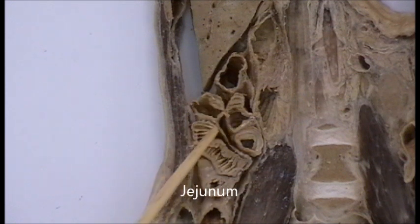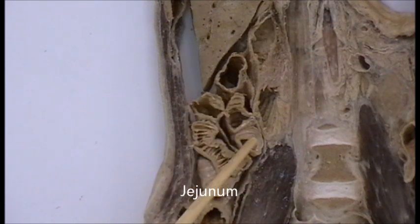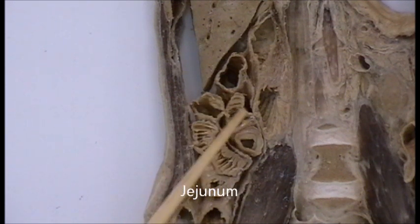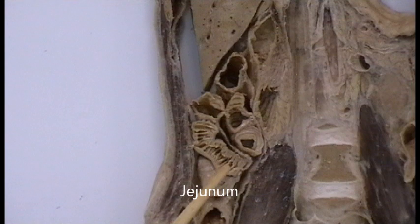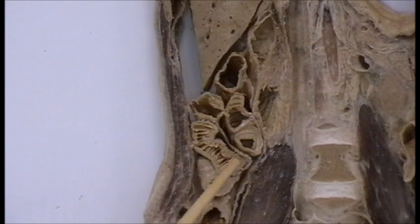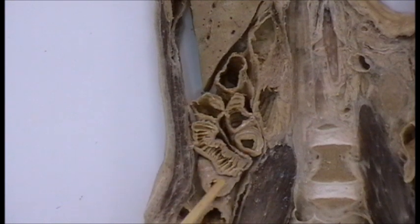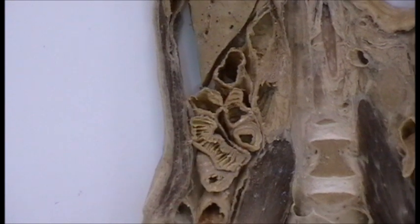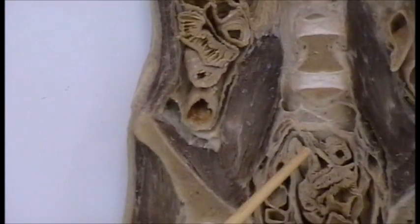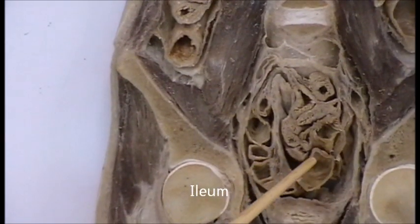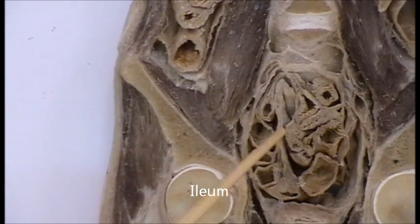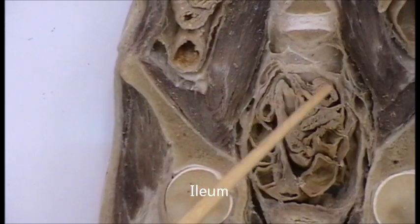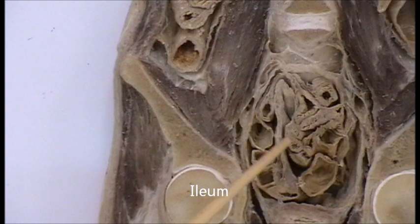These are coils of small intestine — the jejunum and the ileum. Again you can see the plicae circulares within them. Some of the coils, particularly of the ileum, extend down into the pelvis, as you notice here.